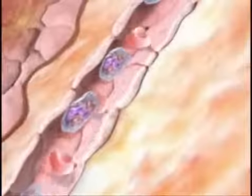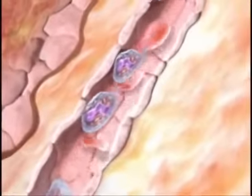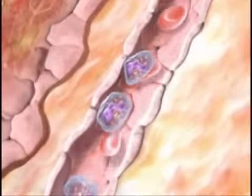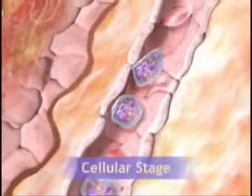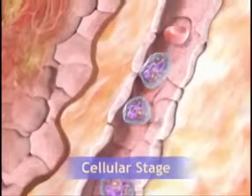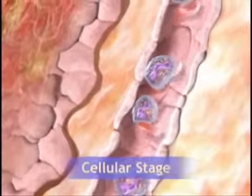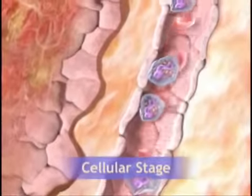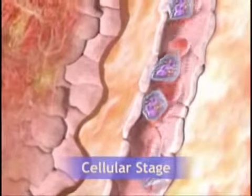The cellular stage of acute inflammation is initiated by the movement of phagocytic white blood cells, or leukocytes, into the area of injury.